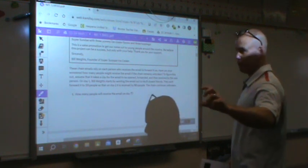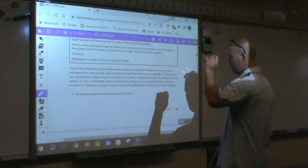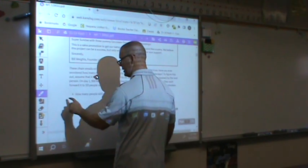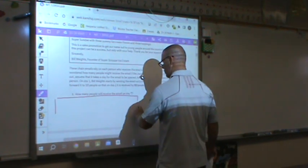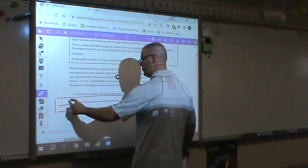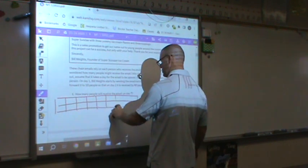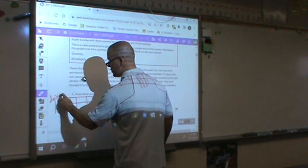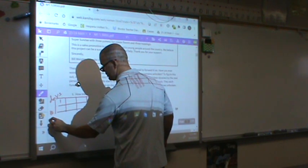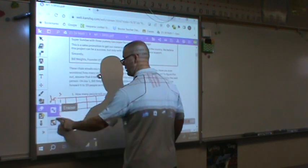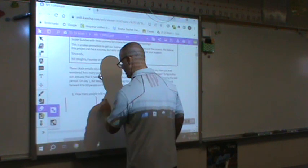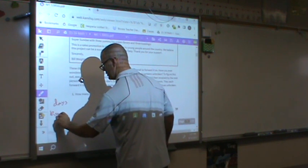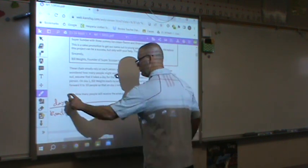Question number one, now that you have read it and have come back from it, it says how many people will receive the email on day seven? Well, what we've got to do is we've got to go back and we've got to look at day one through six and find out. Because I don't have a lot of room here, I'm going to do a table sideways. We're going to do days and emails.